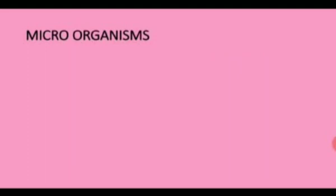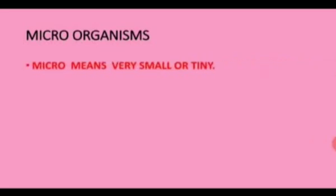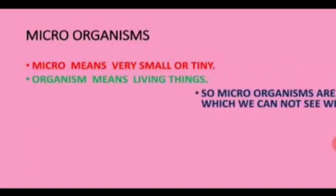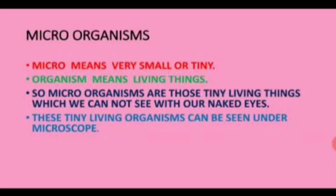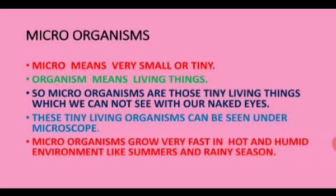Micro-organisms. Let us understand this term. 'Micro' means very small or tiny, and 'organisms' means living things. So micro-organisms are those tiny living things which we cannot see with our naked eyes. These tiny living organisms can be seen only under a microscope. Micro-organisms grow very fast in a hot and humid environment like summers and rainy season, and this is why food gets spoiled faster in summers and rainy seasons.